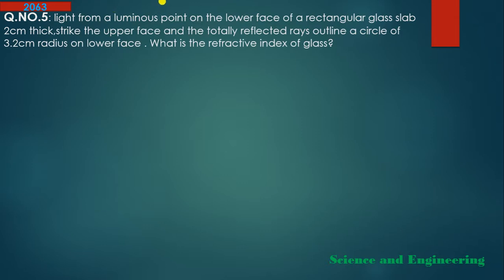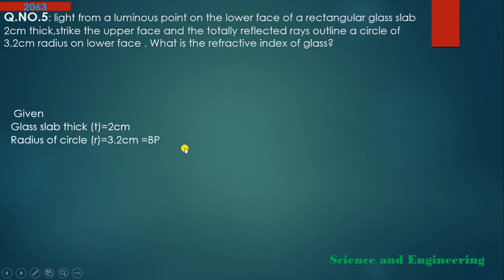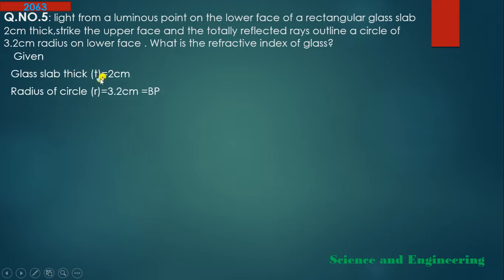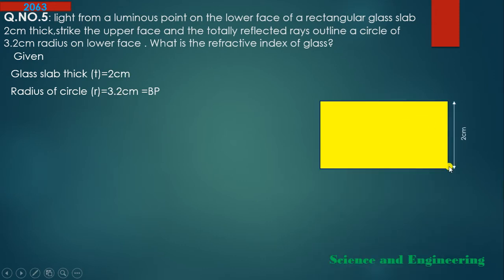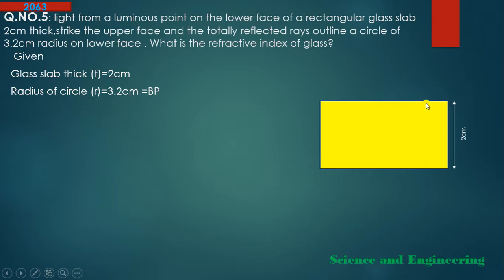Let's understand this from the figure. Given: thickness of glass slab = 2 cm, radius of circle is given. The glass slab has a light source at the bottom. Light rays travel upward — going from denser to rarer medium, they bend away from the normal. At a certain angle (critical angle), total internal reflection occurs. Light beyond the critical angle reflects back, and all these reflected rays reach the lower face forming a circle.